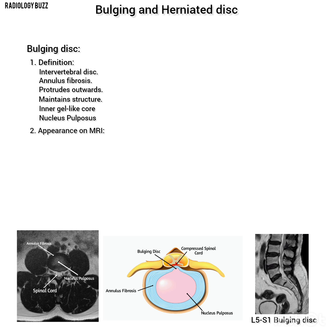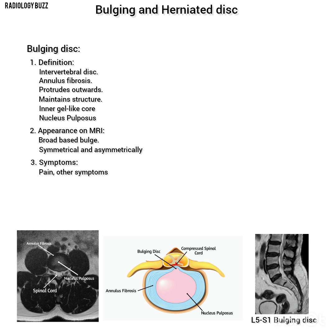Appearance on MRI: the disc appears as a generalized broad-based bulge extending symmetrically or asymmetrically around the disc's circumference, typically not more than three millimeters. Symptoms: bulging discs are often asymptomatic, but they can sometimes cause pain or other symptoms if they press on nearby nerves or the spinal cord.